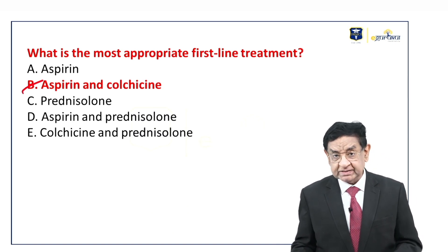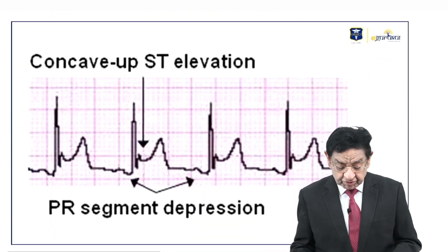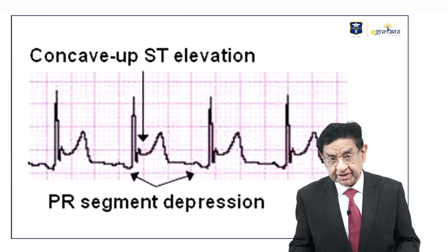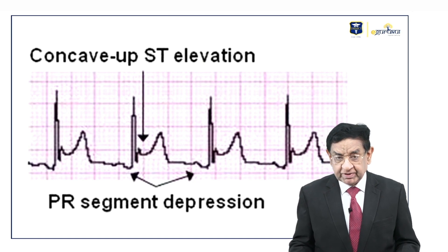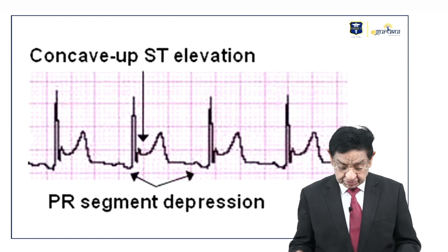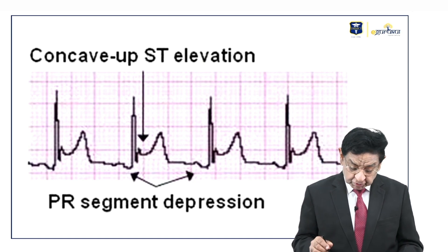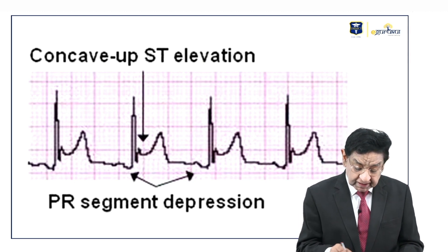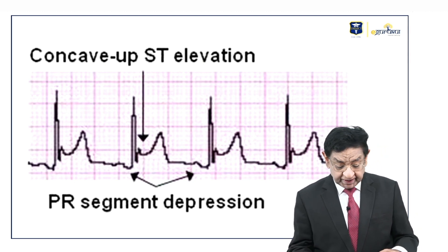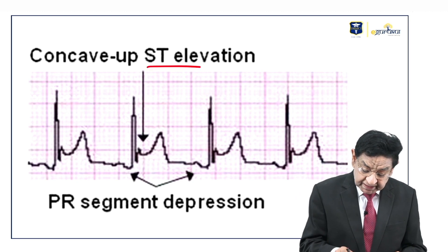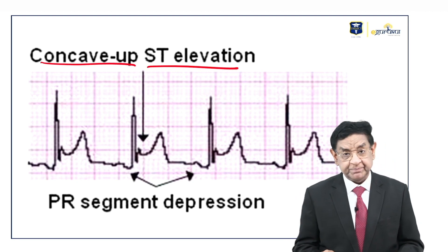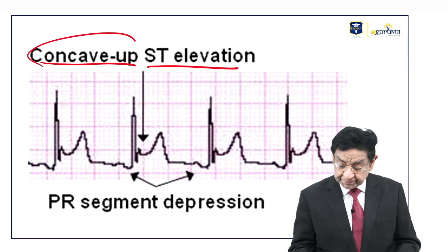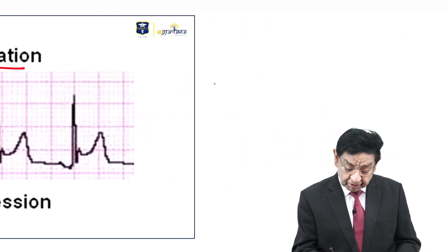Why is this the answer? Why not others? First of all, as the question says, it is a case of acute pericarditis and there was ST segment elevation also. So what type of elevation do we see? You can look into this classical ECG finding — there is ST elevation but it is concave up. Why is it so important to note concave up? Because this is a normal recording.